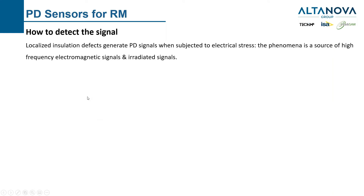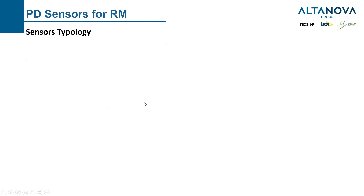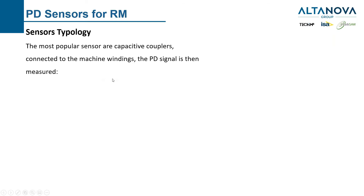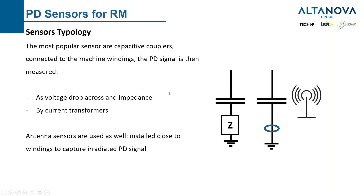How do we detect the signal? PD phenomena generate sources of high frequency electromagnetic signals — both conducted and irradiated. We can force the conducted signal to pass across our sensor, or we can try to measure it with antennas or other approaches. Different sensors will always give different output, different sensitivity, and they may or may not provide a synchronization signal. The most popular sensors are capacitive couplers, connected to the rotating machine connection, where the signal is measured either across a measuring impedance as a voltage drop or with a high frequency current transformer. There is also another solution using antenna sensors installed inside the stator to pick up irradiated signals.